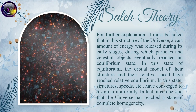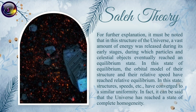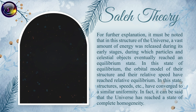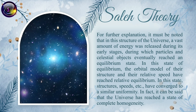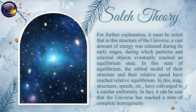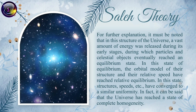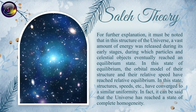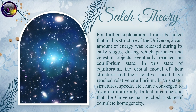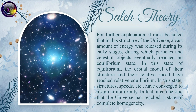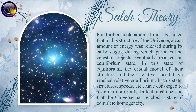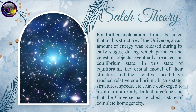For further explanation, it must be noted that in this structure of the universe, a vast amount of energy was released during its early stages, during which particles and celestial objects eventually reached an equilibrium state. In this state of equilibrium, the orbital model of their structure and their relative speed have reached relative equilibrium, and structures, speeds, etc. have converged to a similar uniformity. In fact, it can be said that the universe has reached a state of complete homogeneity.